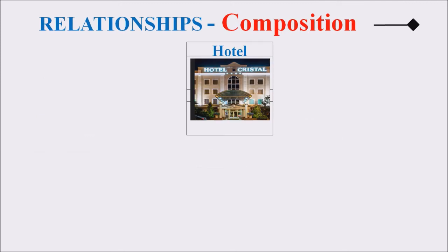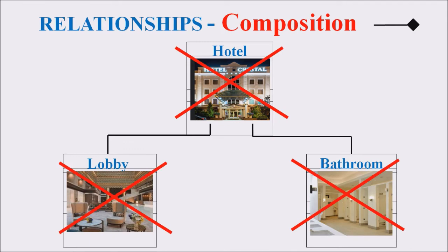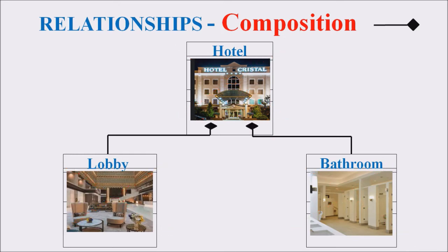The next relationship is composition, represented by a closed or shaded diamond. Consider a class called Hotel, with two other classes called Lobby and Bathroom. These two classes are in relationship with the Hotel class. Without Lobby and Bathroom, the Hotel cannot exist, and without the Hotel, the Lobby and Bathroom of that hotel do not exist.